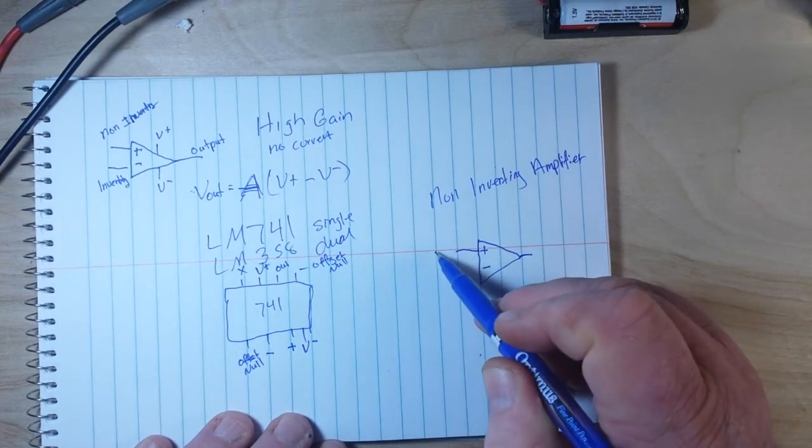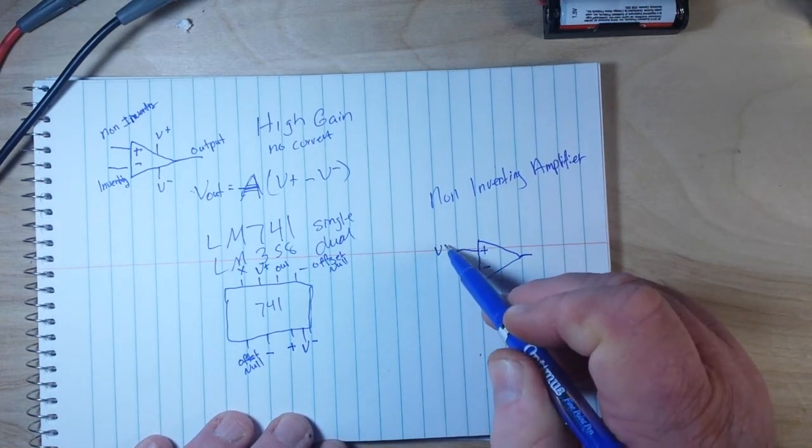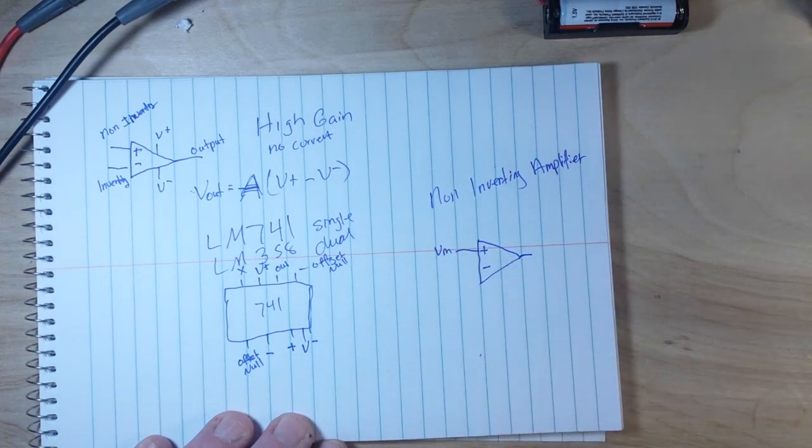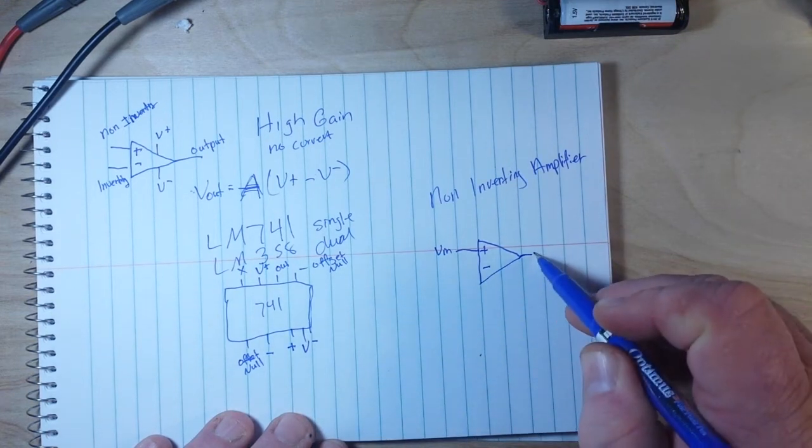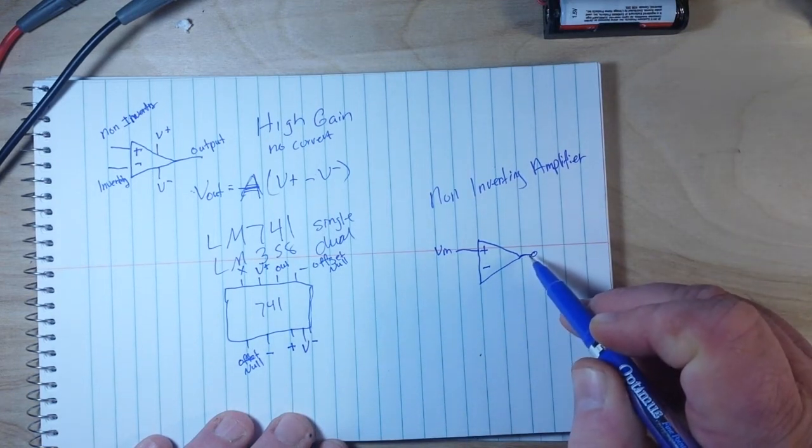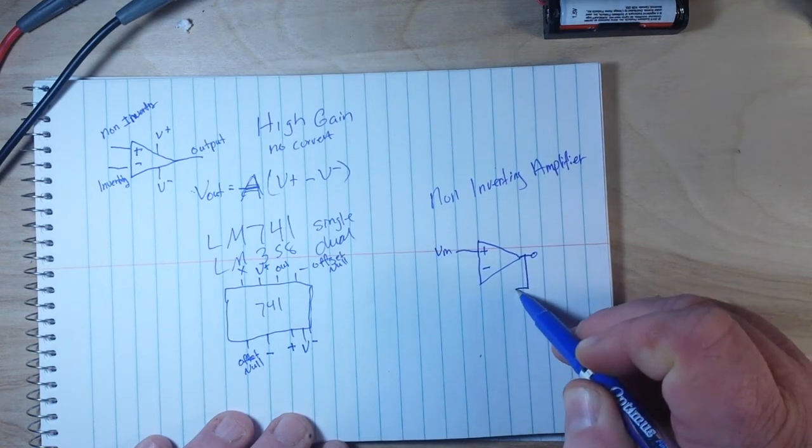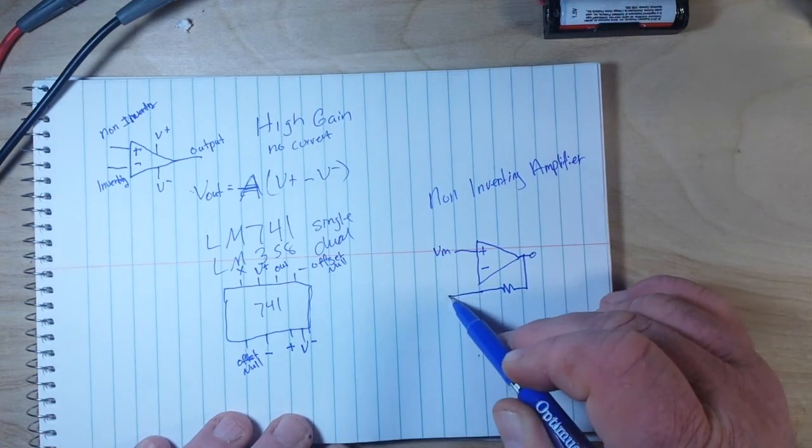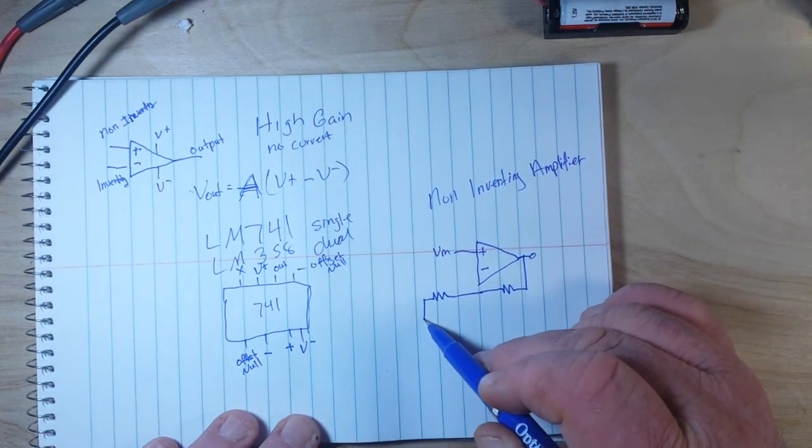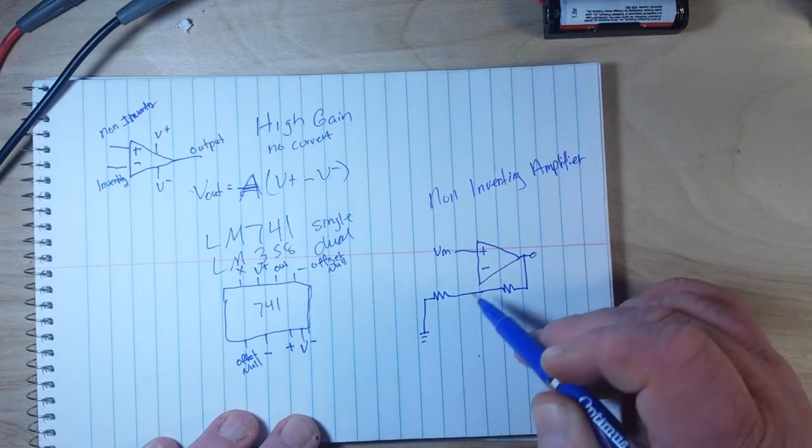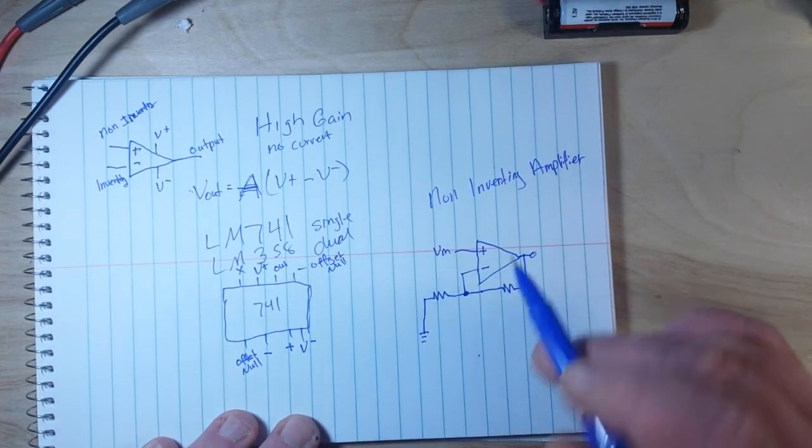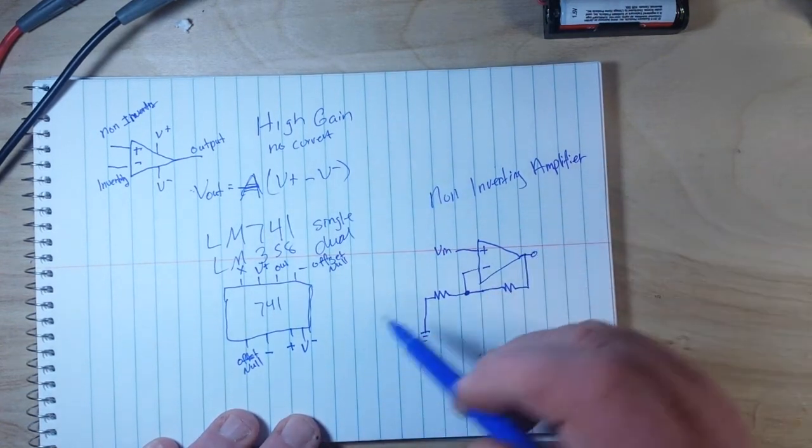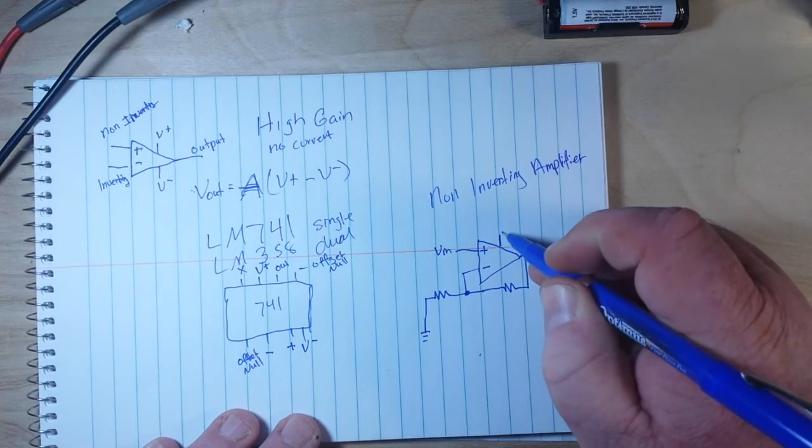So we will have a voltage coming in to our non-inverting input. And then from V out, we are going to have basically a voltage divider that feeds back to the inverting input. Now remember I told you we have those two power sources.